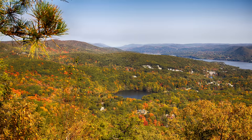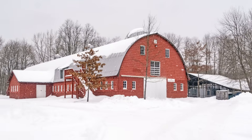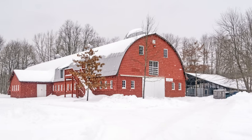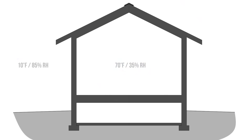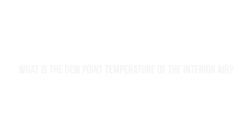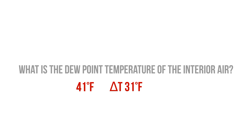Let's say that you live in upstate New York, where during the winter months, nighttime lows can easily be below 10 degrees Fahrenheit, and let's say that you're operating at 70 degrees Fahrenheit at 35% relative humidity, which is fairly common. What is the dew point temperature of that interior conditioned air? It's about 41 degrees — nearly 30 degrees higher than the temperature outside.